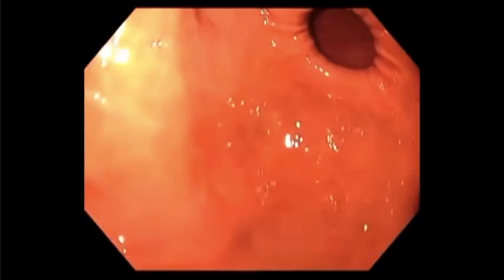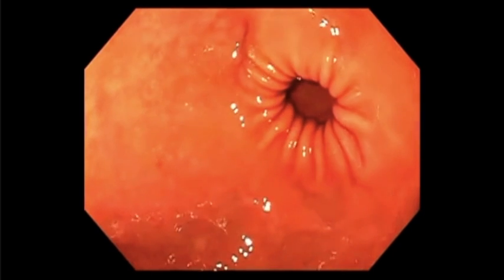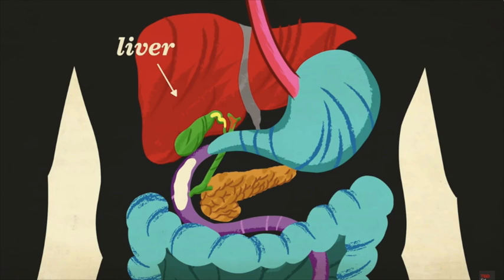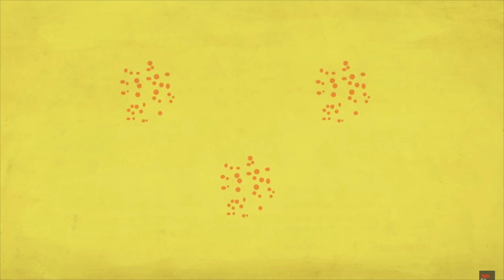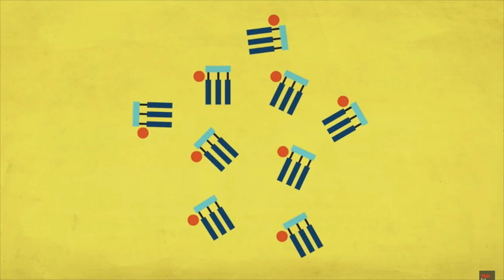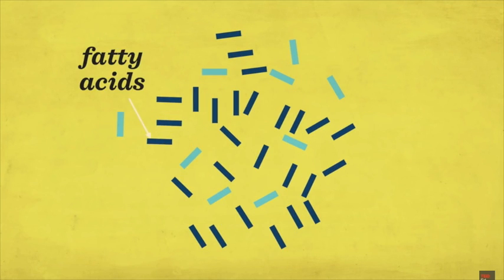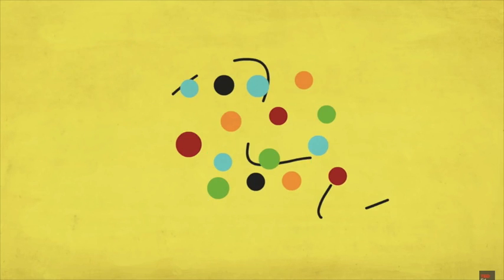This chyme is pushed through the pyloric sphincter and into the duodenum. There, the liver and gallbladder excrete bile juice which breaks down the fats into glycerol and fatty acids. The pancreas excretes pancreatic juice which further breaks down the protein and carbohydrates into simple glucose.